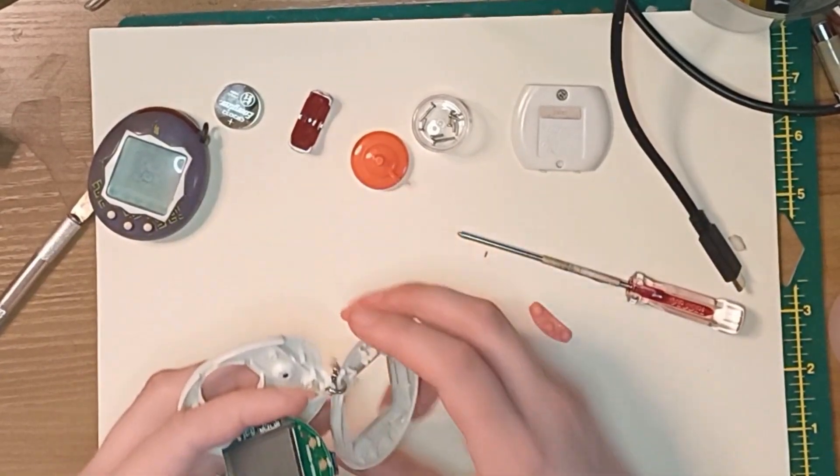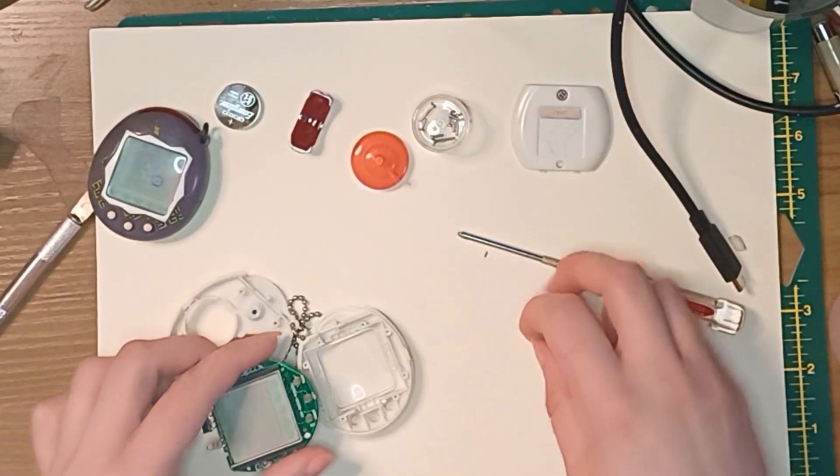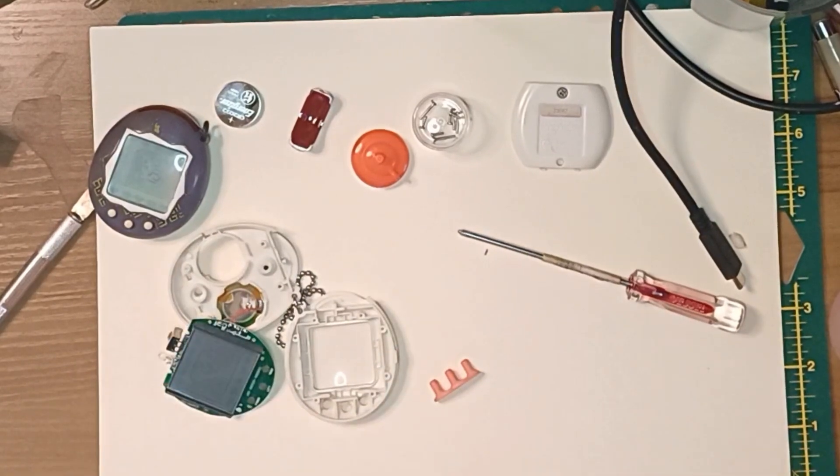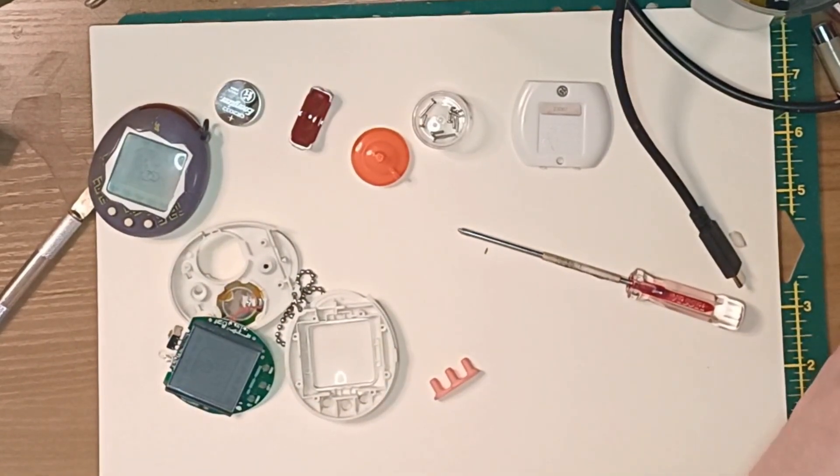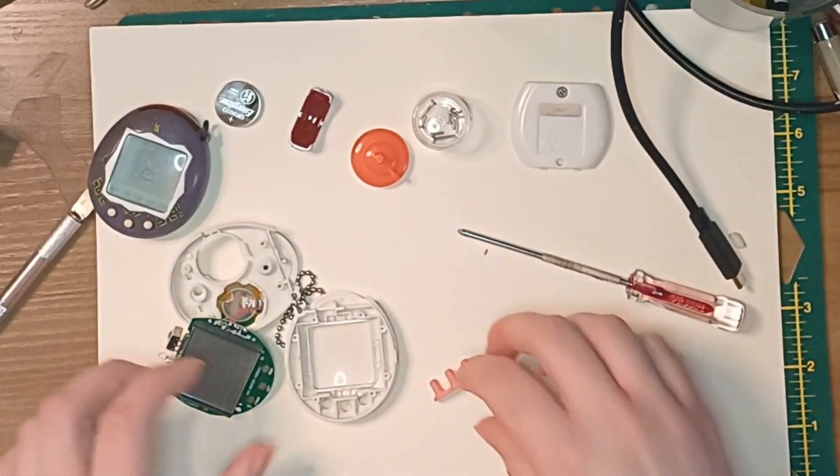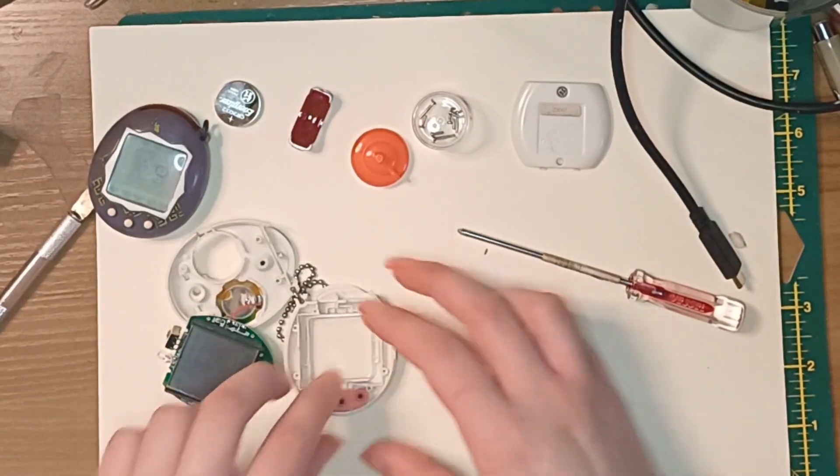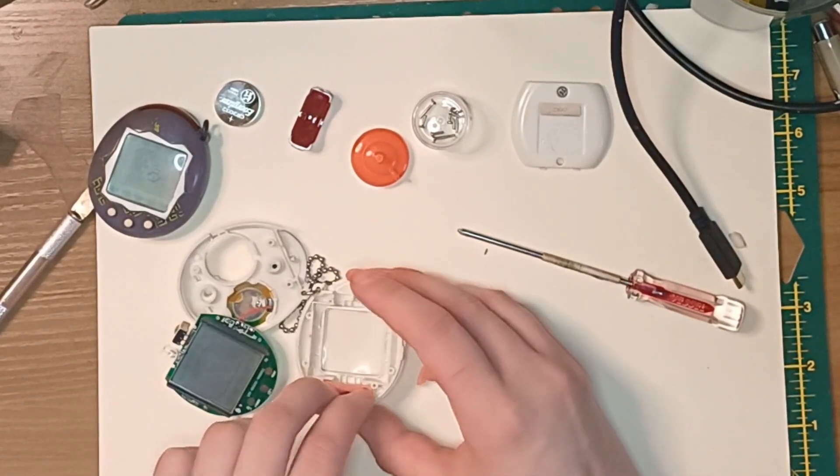Easy peasy pumpkin pie. You can put the buttons back in there. We can put the lid back on the nail polish remover.